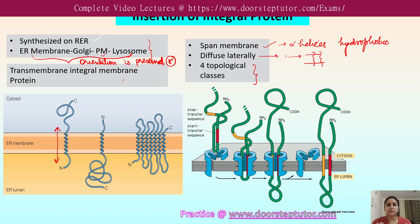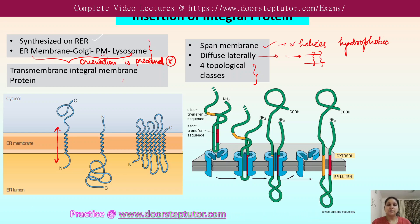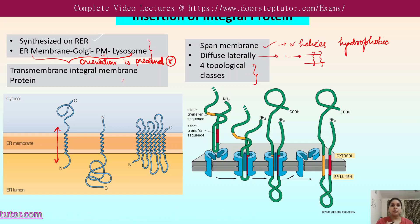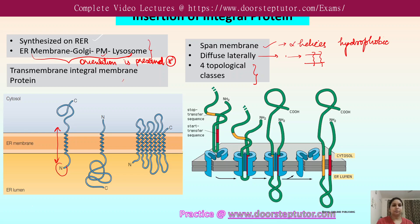Due to the preserved orientation, there are four different orientations or four topological classes in which the transportation of these membrane proteins is possible. Let's discuss how this orientation works and what the different topological classes are.